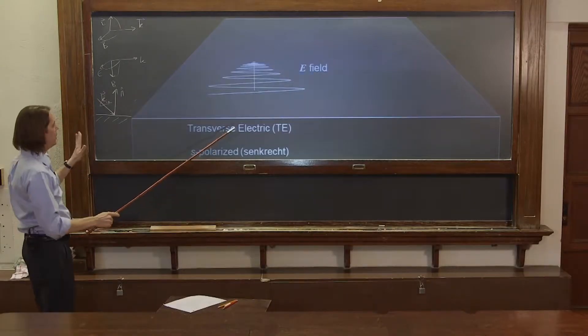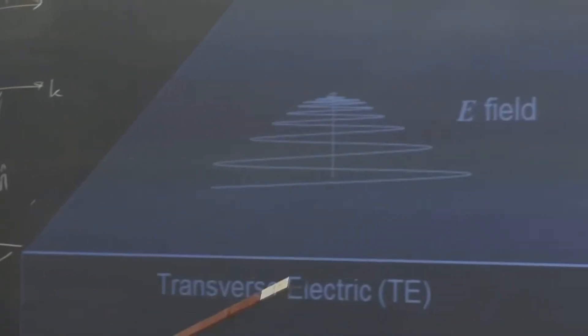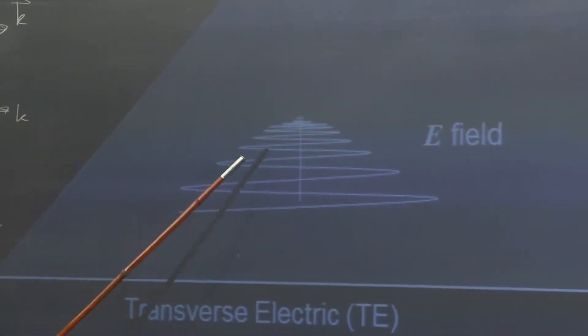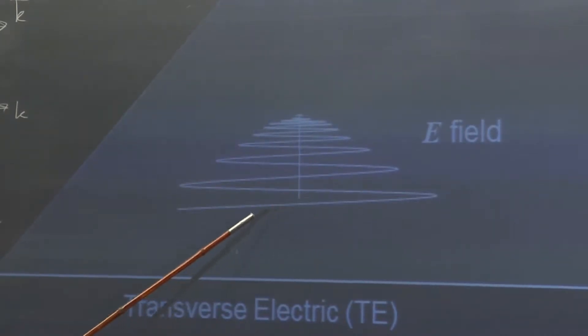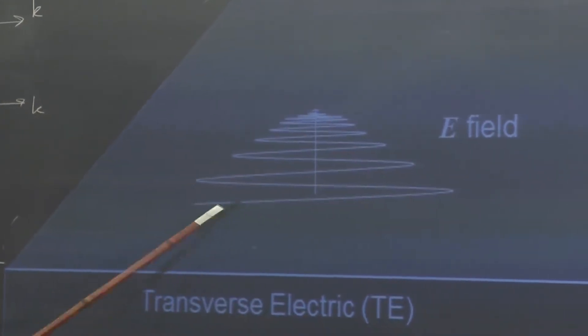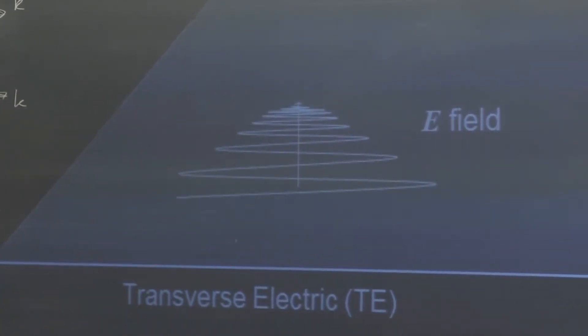So in this drawing, the plane of incidence is perpendicular to the board. Because K is going into the board, and the plane of incidence is like this. The electric field points perpendicular to the plane of incidence. It's transverse to the plane of incidence. That's why this polarization with the E field doing this is called transverse electric.